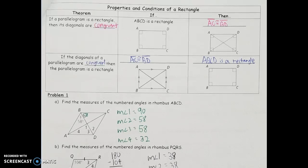Using those properties for a few questions — find the measures of the numbered angles in rhombus ABCD. If I'm given that this part of angle B is 58 degrees, that tells me the unlabeled adjacent part is also 58 because that angle is being bisected. More importantly, angles 2 and 3 would also both be 58, because in a parallelogram opposite angles are congruent, and if those angles are split evenly, they're the same on both sides. So 58 and 58 in one corner, and 58 and 58 in the opposite corner.